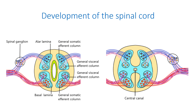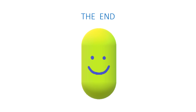These four cell columns are termed general because there are three special columns in the brainstem. The lumen of the neural tube reduces in size and forms the central canal. Neuroepithelial cells of the ventricular zone differentiate into ependymal cells, forming the lining of the central canal. Thank you for your attention.